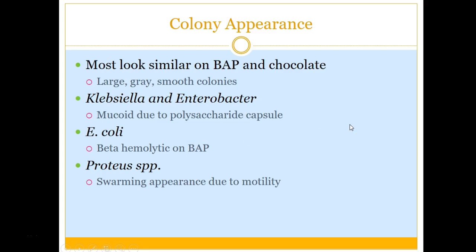Colony appearance: gram-negative rods in general tend to produce larger colonies, typically gray, and they're a little stinkier than gram-positives. Some extra notes: Klebsiella and Enterobacter are part of the Enterobacteriaceae group and are very mucoid due to a polysaccharide capsule. They literally look like snot on a plate — very wet, almost like they're going to run down.